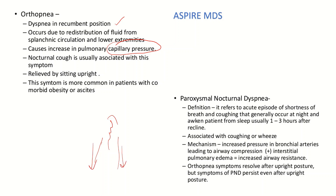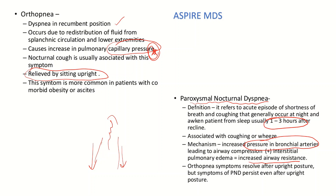When the patient sits upright, blood goes back to the lower extremities and symptoms relieve. Paroxysmal nocturnal dyspnea is an acute episode of shortness of breath and coughing, usually occurring one to three hours after the patient goes to sleep. It is due to increased pressure in the bronchial arteries along with compression of the airway, leading to increased airway resistance. Unlike orthopnea, paroxysmal nocturnal dyspnea does not resolve even after sitting upright — this is the key difference between the two.